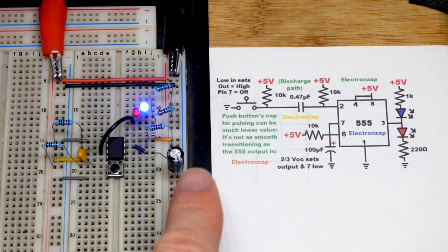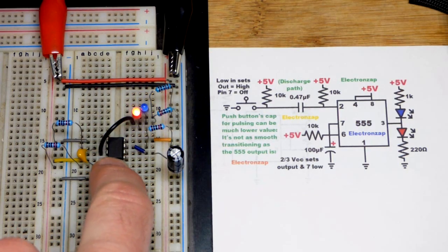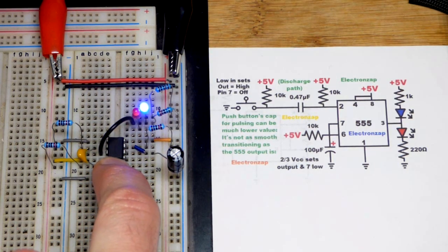The output is high for a period of time set by the capacitor and the resistor, the timing components. I'll do it again. I'm going to hold the button down now though, and you can see even though I'm holding down the button, the output went back low.